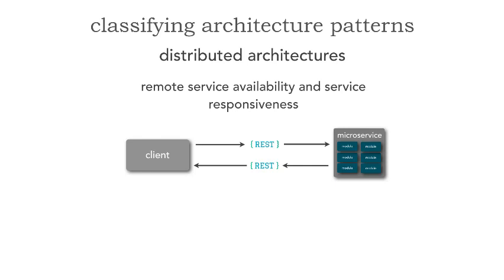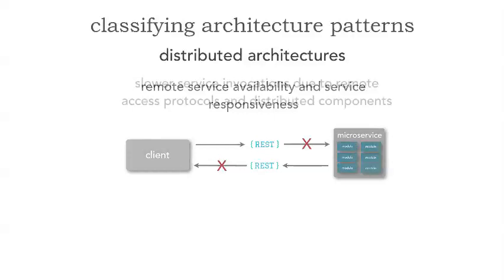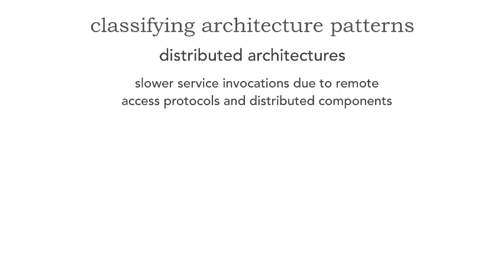The other thing is remote service availability and service responsiveness. These are two different aspects we have to deal with in distributed architectures. Availability means: can you even receive my request? Responsiveness means: you received my request but you're not responding back. I need some sort of timeout value or circuit breakers to handle this kind of error handling. This becomes complex in a distributed architecture — something we don't have to deal with in monolithic architectures.